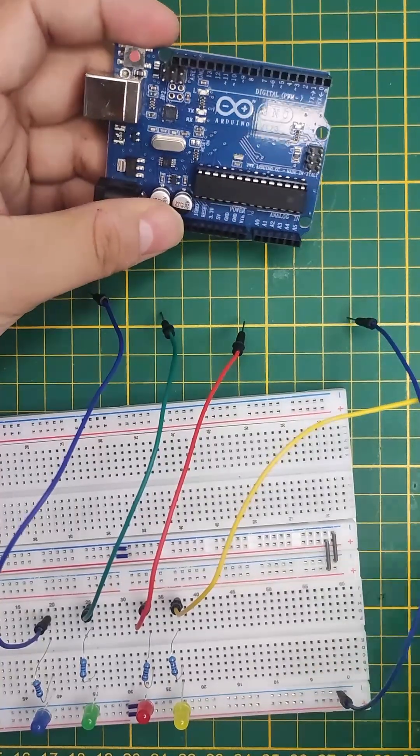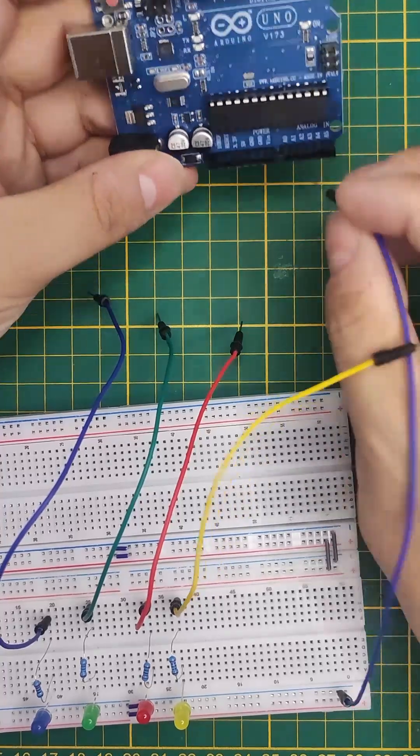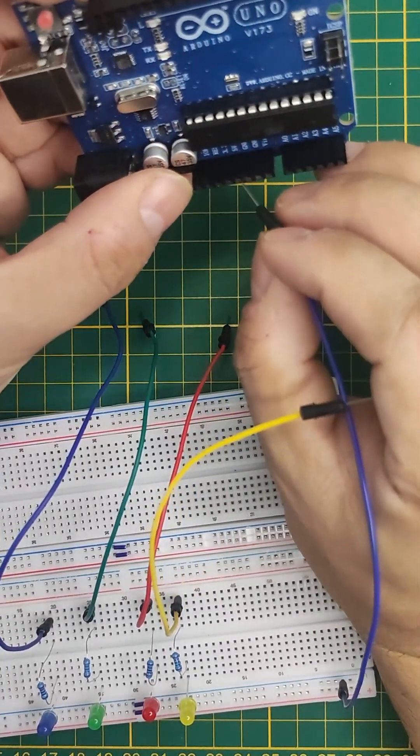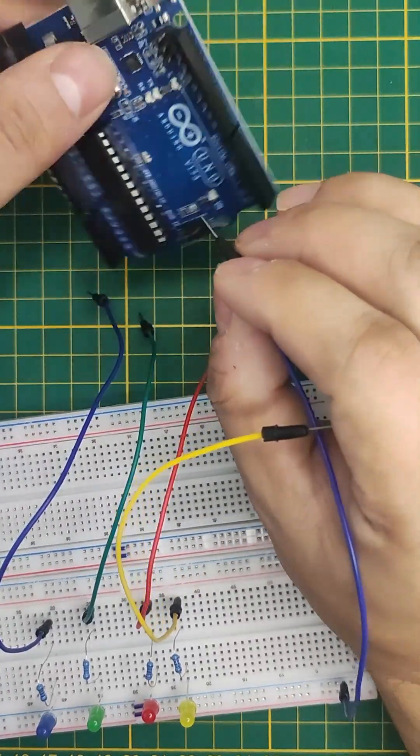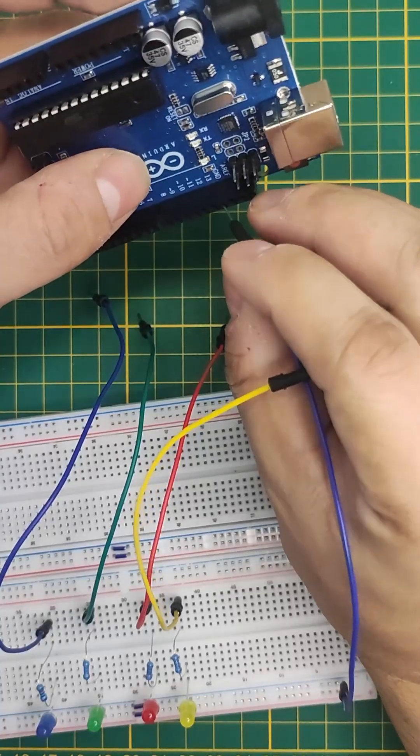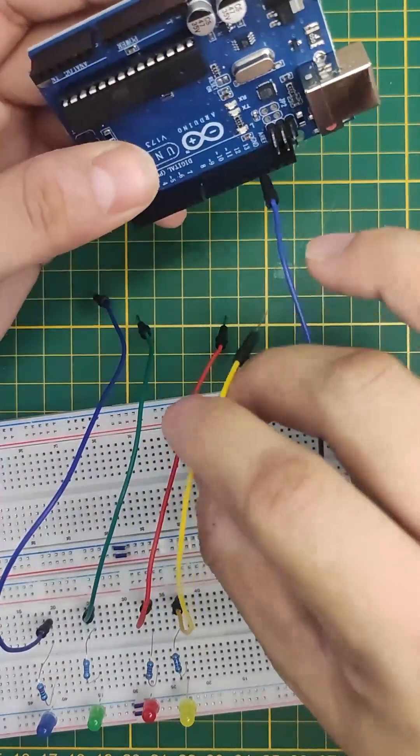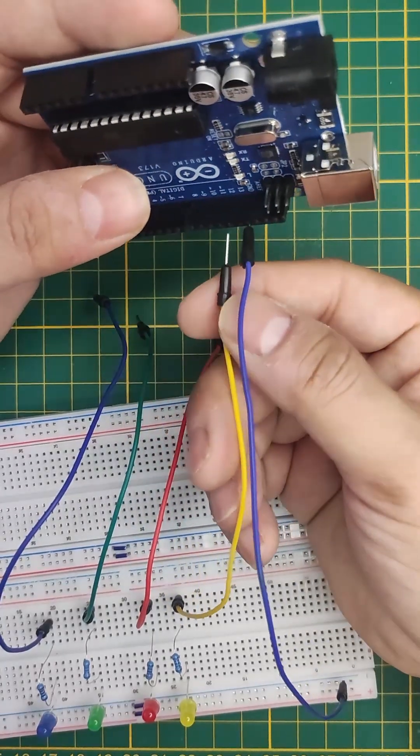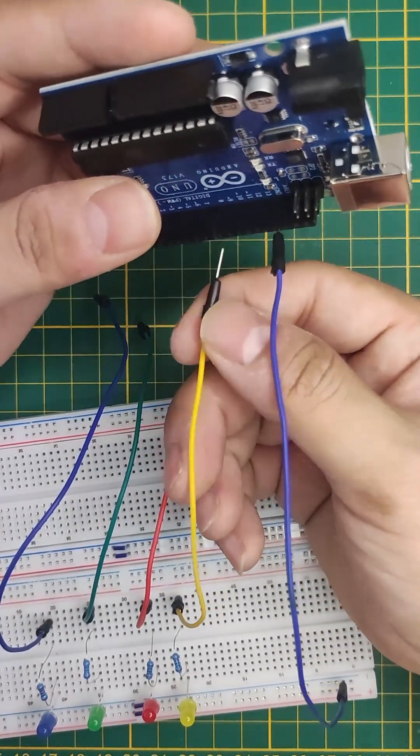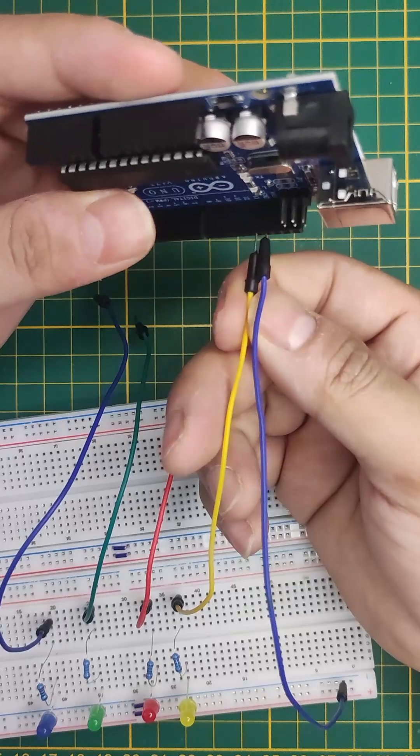Now we need to connect our Arduino. Here is the ground, so you can connect the ground to ground or you can use the other ground on the side as well. We can connect the LEDs' positive side to any of the digital pins. I will start with pin 13, then 12, 11, and 10. The ground is already connected.